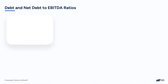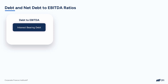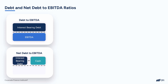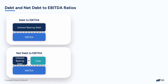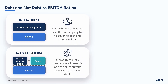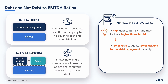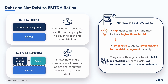Our final two leverage ratios compare debt to EBITDA. The first ratio, debt-to-EBITDA, takes interest-bearing debt and divides it by EBITDA. The second ratio, net debt-to-EBITDA, is very similar except that we make the assumption that cash can be used to pay off interest-bearing debt. The second ratio will always be lower than the debt-to-EBITDA ratio as long as the business has cash on hand. These ratios are used by investors and lenders to evaluate the company's ability to generate sufficient earnings — EBITDA — to cover its debt payments. A high debt-to-EBITDA ratio may indicate higher financial risk, while a lower ratio suggests lower risk and better debt repayment capacity. These ratios are also very popular with M&A professionals who typically talk in EBITDA multiples when valuing a business.